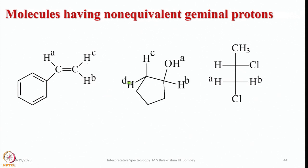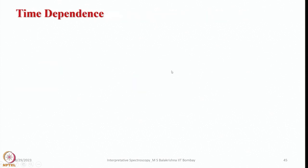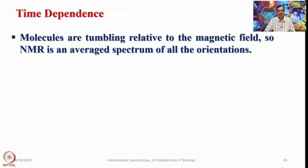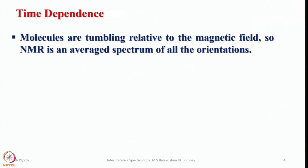Molecules having non-equivalent geminal protons include styrene, where Hb and Hc are geminal and non-equivalent, and geminal coupling is observed, though its magnitude is very small. Similar examples exist in other unsymmetrically substituted alkene systems.